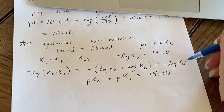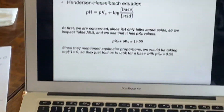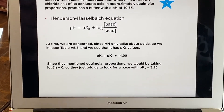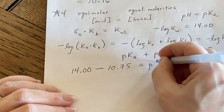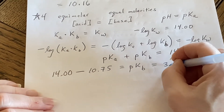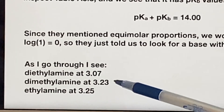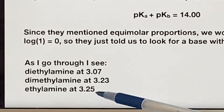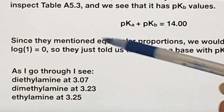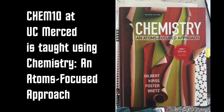This is how you use it: you start looking through your conjugate base list for the pKb closest to 3.25. Diethylamine is at 3.07, dimethylamine is even better — I might be tempted to stop there. But if I keep looking, I find ethylamine at exactly 3.25. So diethylamine, dimethylamine, and ethylamine are the candidates, with ethylamine being the exact match.